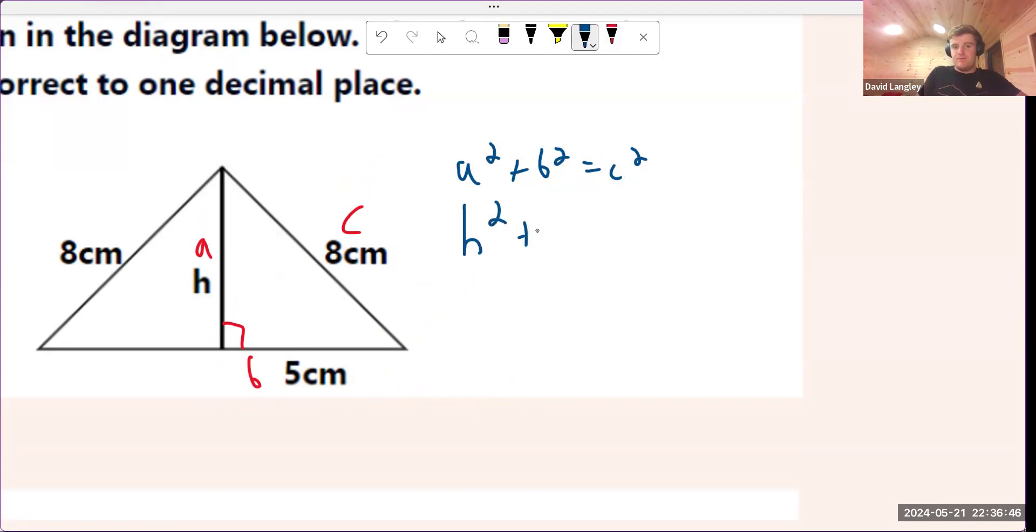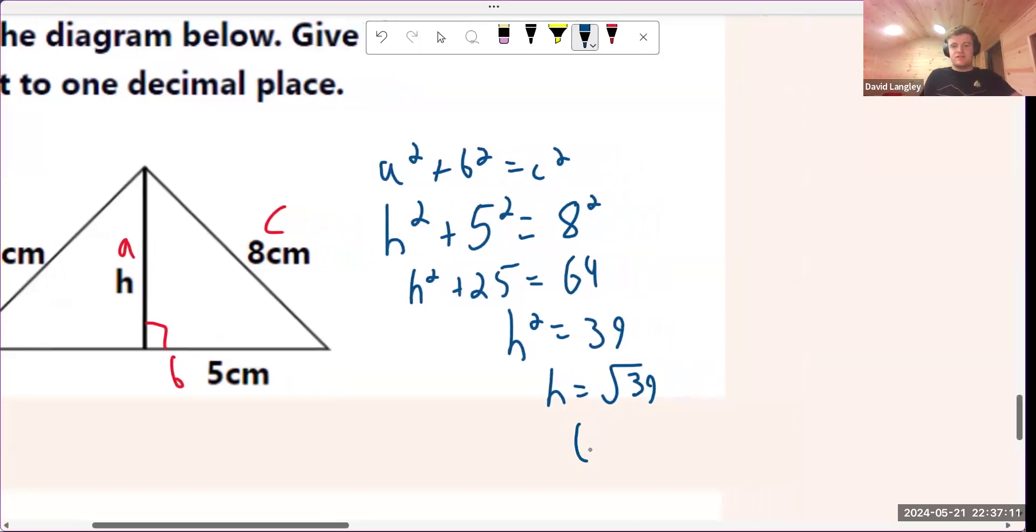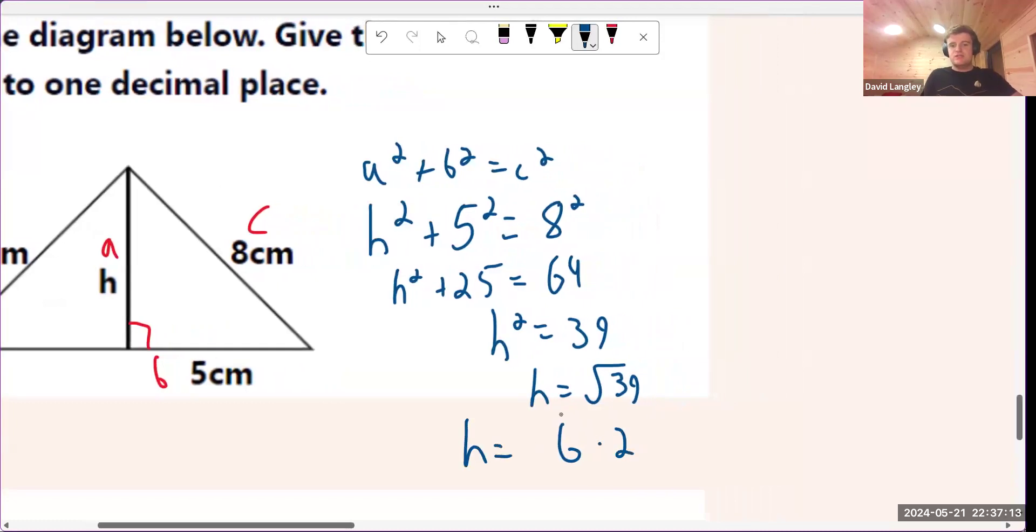And so we're going to have h squared plus 5 squared equals 8 squared. h squared plus 25 equals 64. I'm going to bring 25 over, and I'm going to take 64 away from it. I'm going to h squared equals 39, and then h equals the square root of 39, which is approximately 6.24 or 6.2, correct to one decimal place.